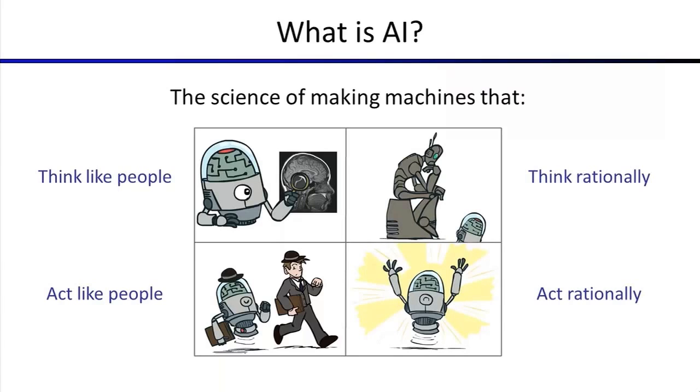So the winner for this course is AI, for us, is the science of making machines that act rationally. So what's that mean? We only care about what they do. And our requirement on what they do is that they achieve their goals optimally.